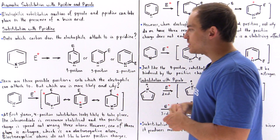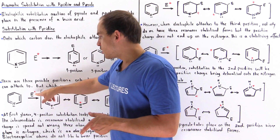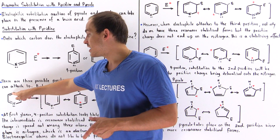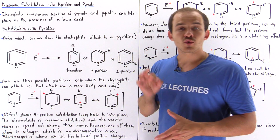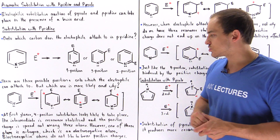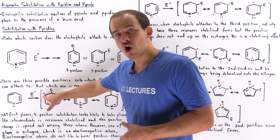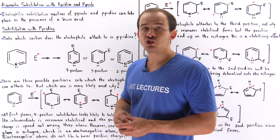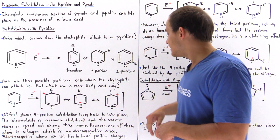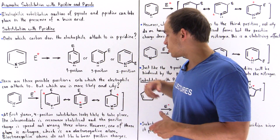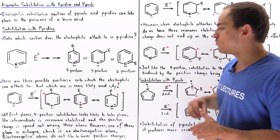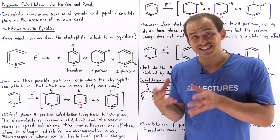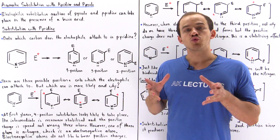Let's begin with the fourth position. If the electrophile E⁺ attaches to our fourth position — that is, this carbon — then we get three resonance-stabilized structures. Structure one has the positive charge on the fifth carbon, structure two has the positive charge delocalized onto our electronegative nitrogen, and structure three has it delocalized onto the third position via movement of our pi bond. So at first glance, it might seem like the fourth position substitution reaction does readily take place.